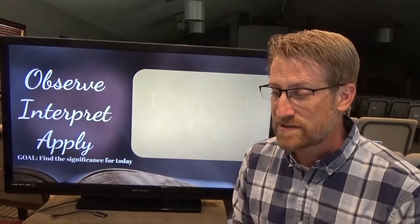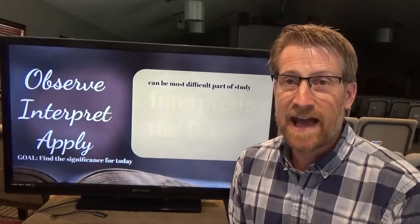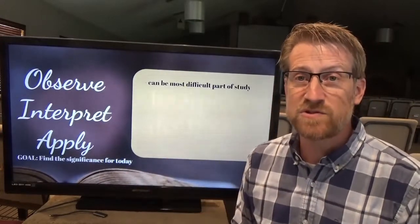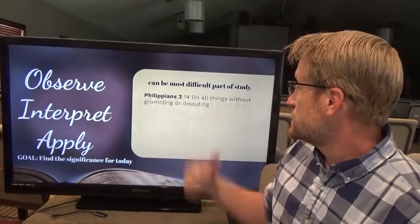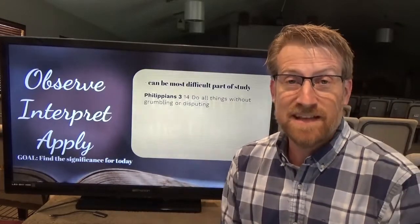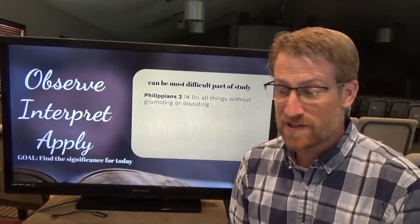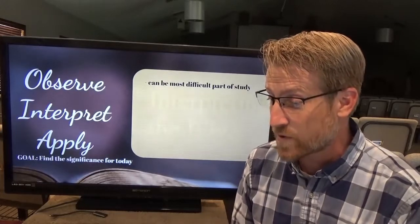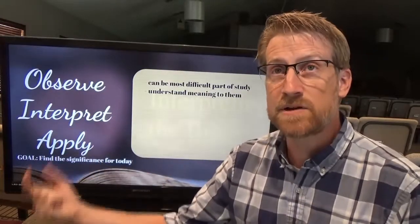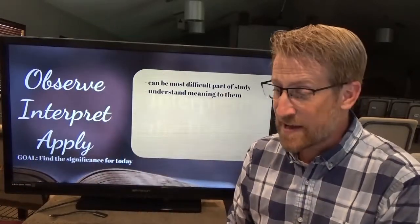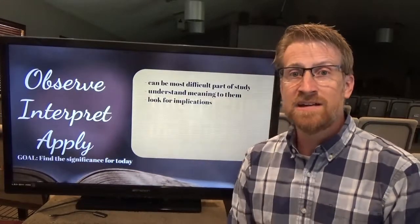This is the goal for a Christian in interpretation. Now, application could possibly be the most difficult part of study. We've observed, we've interpreted, we've figured out the original meaning — but now it's time to ask, what does this mean for me? Take Philippians 2:14 as an example: 'Do all things without grumbling or disputing.' That's a pretty clear passage — we don't need a lot of observation and interpretation to figure out what it means, and yet applying it to our lives is very difficult. So start by understanding the meaning to the original audience, then begin to move on and apply it. Look for implications, not just applications.